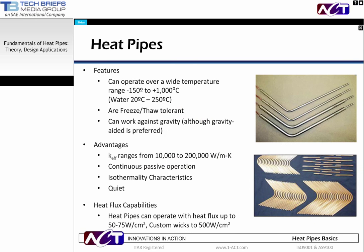Now that we know a little bit about heat pipe operation, let's look at how this can be put to use. With different combinations of envelope materials, wick structures, and working fluid, heat pipes can be used over a wide temperature range — from cryogenic to liquid metal, from minus 150 to 1,000 degrees C. Because they are sealed vacuum devices, some working fluids can operate well beyond the nominal boiling point. Water, for example, can be an effective working fluid from 20 to 250 degrees C.